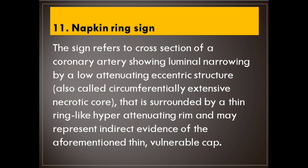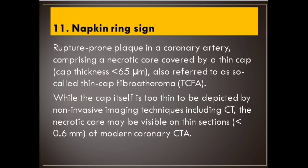Number 11: Napkin ring sign. The sign refers to a cross-section of a coronary artery showing luminal narrowing by a low-attenuating eccentric structure, also called a circumferentially extensive necrotic core, surrounded by a thin ring-like hyperattenuating rim, representing indirect evidence of a thin vulnerable cap. Rupture-prone plaque in a coronary artery comprising a necrotic core covered by a thin cap (thickness less than 65 μm) is referred to as thin cap fibroatheroma (TCFA). While the cap is too thin to be depicted by non-invasive imaging including CT, the necrotic core may be visible on thin sections (less than 0.6 mm) of modern coronary CTA.